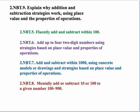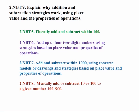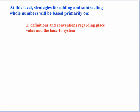Also, 2NBT.7, add and subtract within 1000, using concrete models or drawings and strategies based on place value and properties of operations. Also related to standard 2NBT.9 is standard 2NBT.8, which states mentally add or subtract 10 or 100 to a given number 100 to 900.